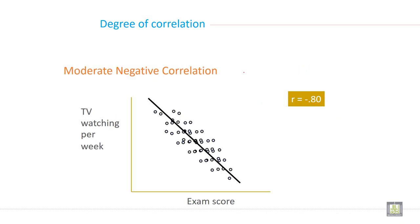Then it is called perfect negative correlation and the coefficient of this is minus 1 exactly.